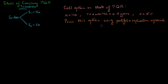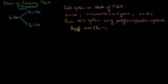We are asked to price this option using the portfolio replication approach. In this approach, the idea is to set up a portfolio using stock and bond such that it exactly replicates the payoff of this option. The payoff of a call option is the maximum of the terminal stock price minus the strike price, or zero, which is also written as (S_T - K)+.